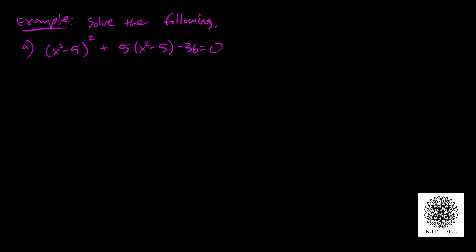Let me show you a couple more examples. Here's my first example: I want to solve x-squared minus 5, quantity squared, plus 5 times x-squared minus 5, minus 36 equals 0. This looks really tough — I'd have to FOIL out x-squared minus 5 and end up with a degree-4 polynomial. Except I notice this fits the quadratic-like pattern: something squared, plus 5 times something, minus 36 equals 0. So I'm going to let u equal x-squared minus 5.